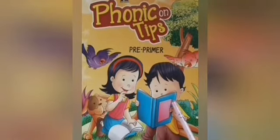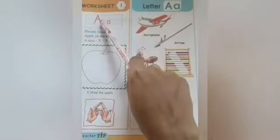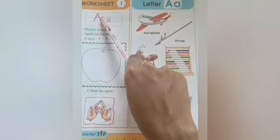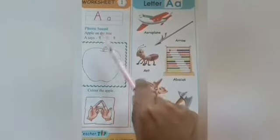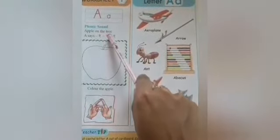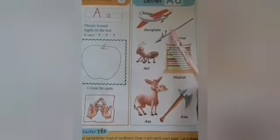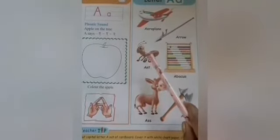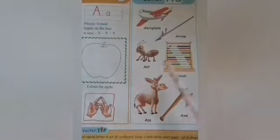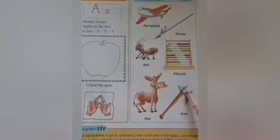A says a - aeroplane. A says a - arrow. A says a - ant. A says a - barkers. A says a - as. A says a - ax.